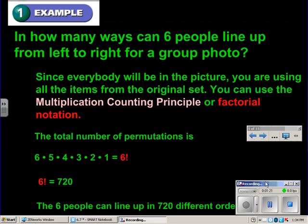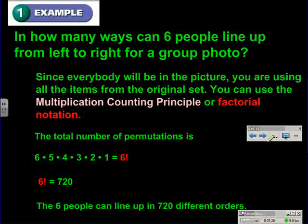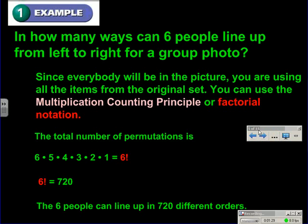Example 1. In how many ways can six people line up from left to right to form a group? Since everybody is going to be in the picture, you will be using all the items from the original set. You can use the Multiplication Counting Principle or factorial notation. It ends up being 6 factorial, which means six people can line up in 720 different ways.